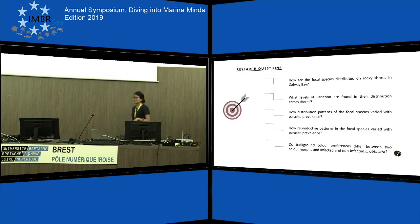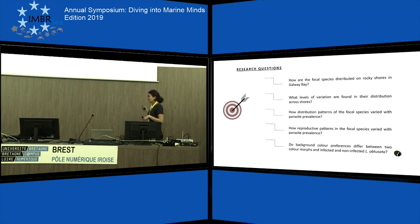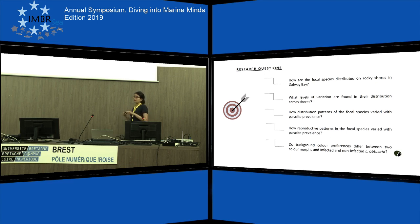Our research questions: we were interested in studying how the focal species were spatially distributed on the shore, whether that distribution varied with trematode parasite prevalence, whether trematode parasites affected the reproductive capacity of their host, and we also conducted a behavioral study to test if infected and uninfected Litorina obtusata have different color preferences.